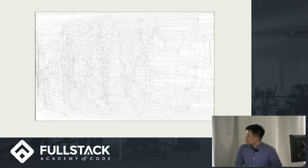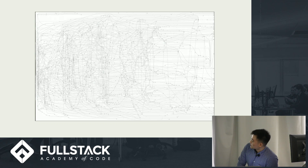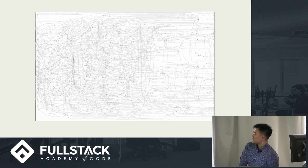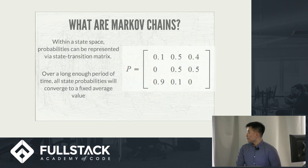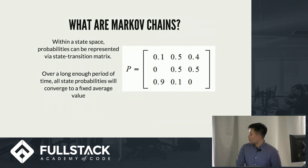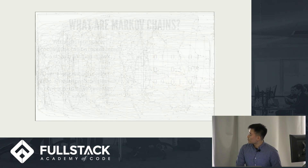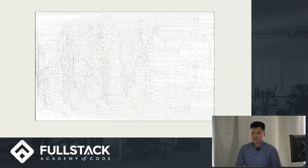But if you were to use a graph, this is what you would be dealing with instead. So if you were to use a Markov chain, try to determine: am I better off with a transition matrix, or am I better off having to deal with something like that?